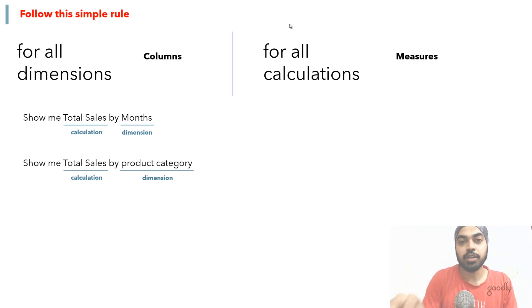Now it may happen that at times your model does not have the dimension, and in that case you will have to create a dimension using a calculated column. Let's take a look at this example: somebody says, hey show me total sales by price range, and let's say that if you do not have the price range as a column, you'll have to create that as a calculated column, right.